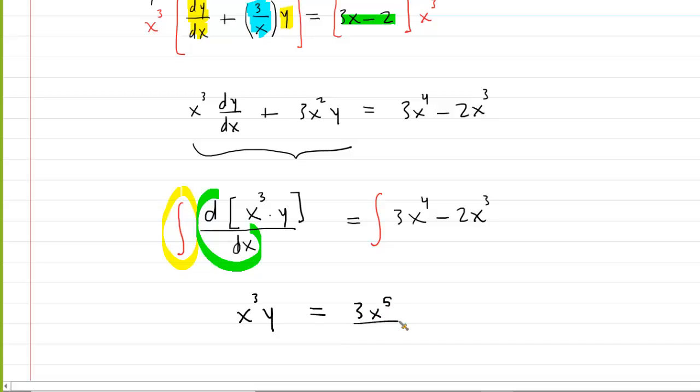And then on the other side, we're going to integrate just using some basic sort of power rules. So, this is 3x to the power of 5 over 5 minus this is 2x to the power of 4 over 4. The 2 over 4 can reduce to just 1 over 2. So, it's actually x to the 4th over 2. And then we have our constant of integration.